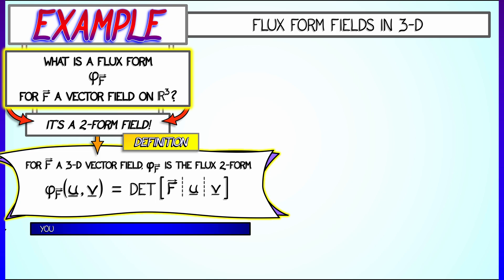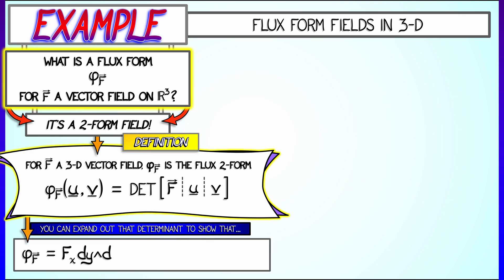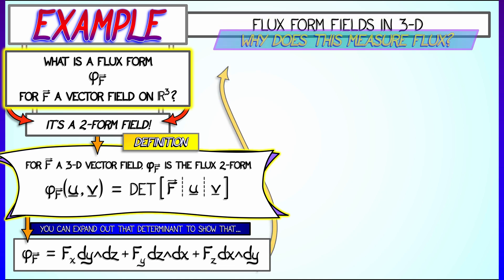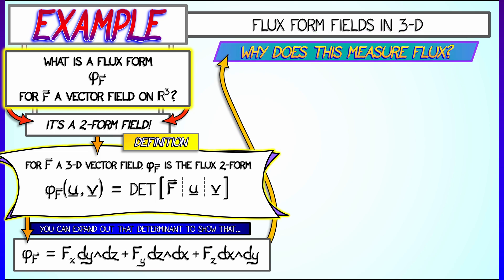Now, by doing minor expansion on that 3x3 matrix, you can show that what phi sub F really is, is Fx dy wedge dz plus Fy dz wedge dx plus Fz dx wedge dy in terms of the components Fx, Fy, Fz.